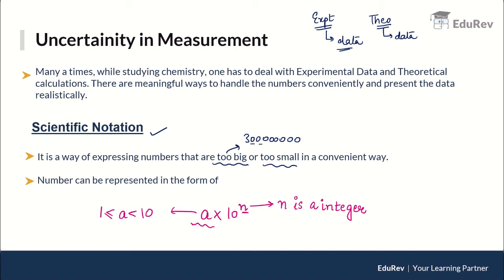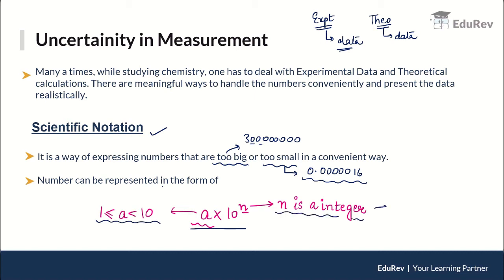Scientific notation is a way of expressing numbers that are too big or too small in a convenient way. For very large numbers, there is a chance of missing a zero while counting, so it is better to represent them in a shorter form. Similarly, for very small numbers like the mass of molecules, there is a higher chance of error — so we represent such data in scientific notation. As per scientific notation, a number is represented as a × 10ⁿ, where a is between 1 and 10, and n is an integer.